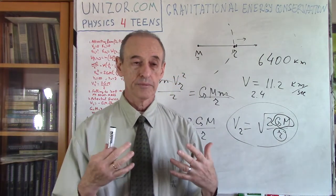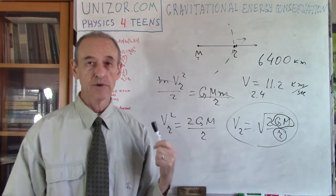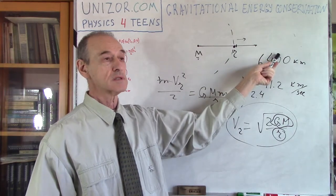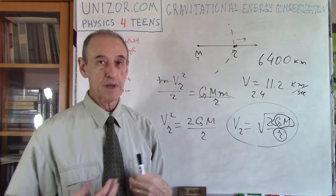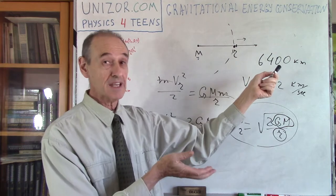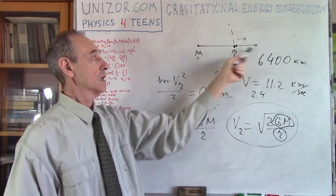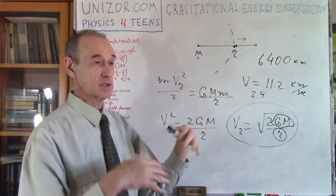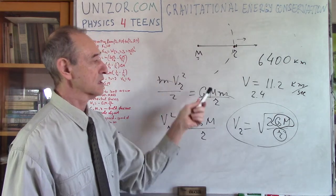The purpose of this lecture was to connect potential energy and kinetic energy in a gravitational field. If we move an object further from a planet against the gravitational field, its potential energy increases. If the object is released and the gravitational field attracts it back, potential energy diminishes while kinetic energy increases, consistent with conservation of energy.